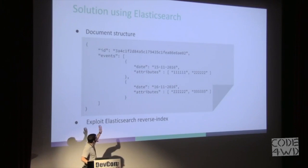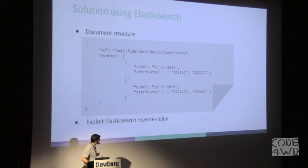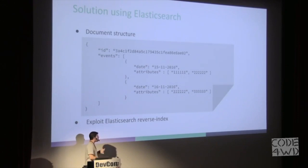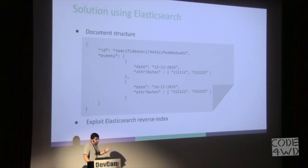The idea was that we built documents where the main document was the device ID, and for each device ID we added sub-documents representing the events we had seen for that device — storing the date and the different attributes assigned to that device ID. We wanted to exploit Elasticsearch's reverse index capabilities: behind the scenes, Elasticsearch built a reverse index from each attribute to all the devices, so we could ask how many unique devices we have for each attribute. By the way, Elasticsearch uses the bit vector approach for maintaining its own indices.